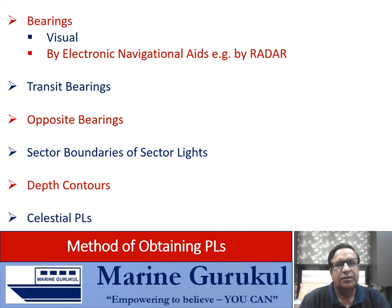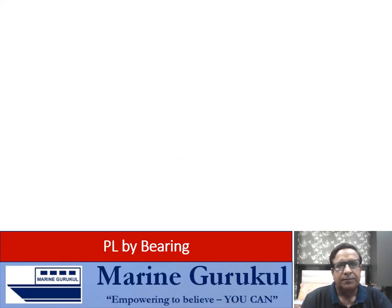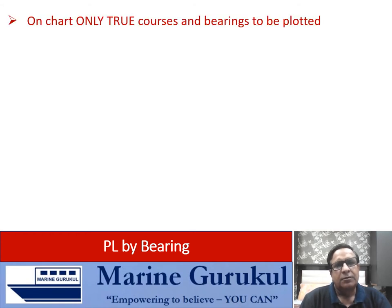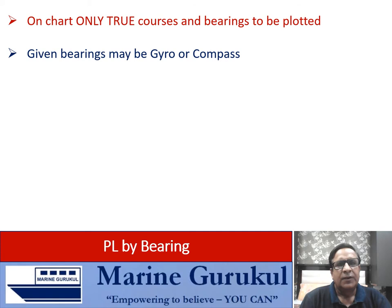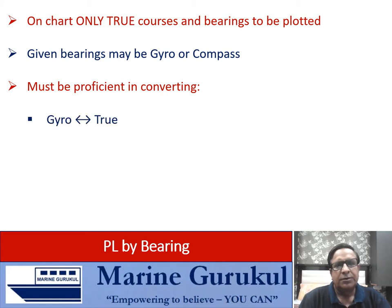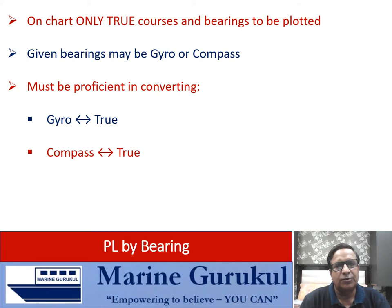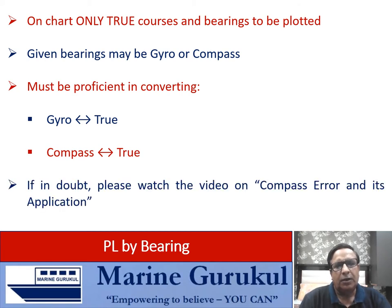Let us now understand all of these one by one. For PL by bearing, on the chart only courses and true bearings are to be plotted. Bearings given in questions or obtained on ships may be gyro or compass, and we must be proficient in converting gyro bearings to true and true to gyro, likewise compass to true and true to compass, depending on which compass — standard or gyro — has been used.